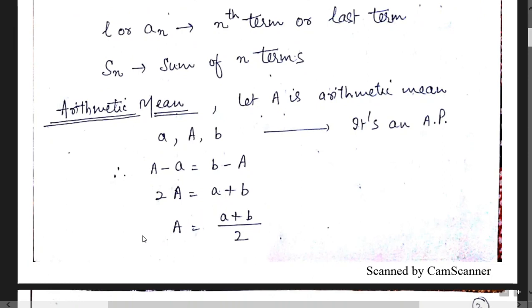The second important formula is arithmetic mean. Suppose I write three terms which are in AP: small a, capital A, and b. If these terms are in AP and A is the arithmetic mean between a and b, then I can write A minus a equals b minus A. It means 2A equals a plus b, and the arithmetic mean A can be written as (first term plus third term) divided by 2, that is (a plus b) divided by 2.